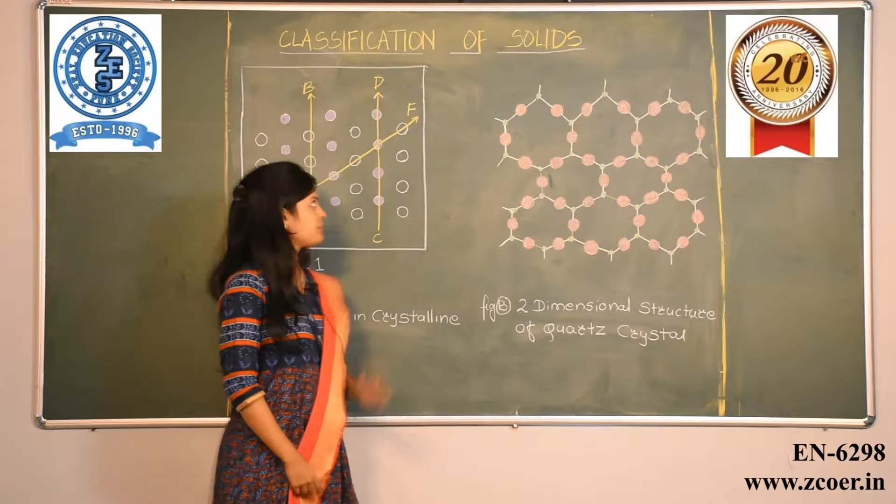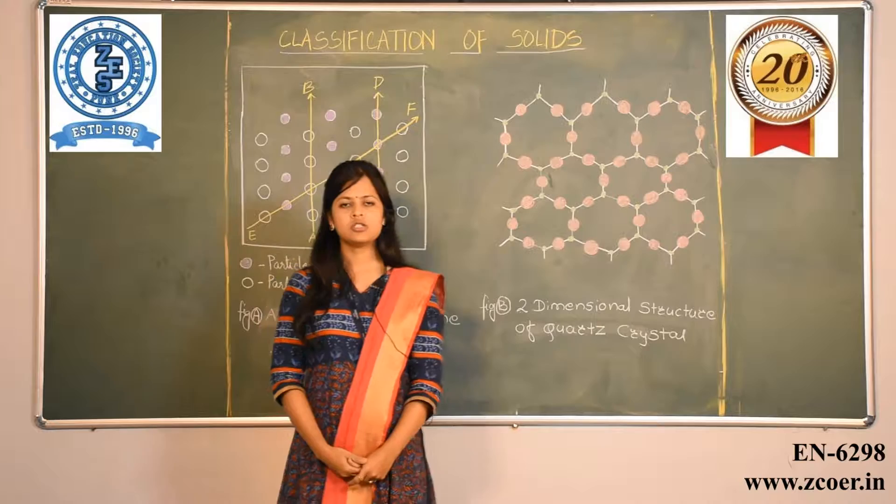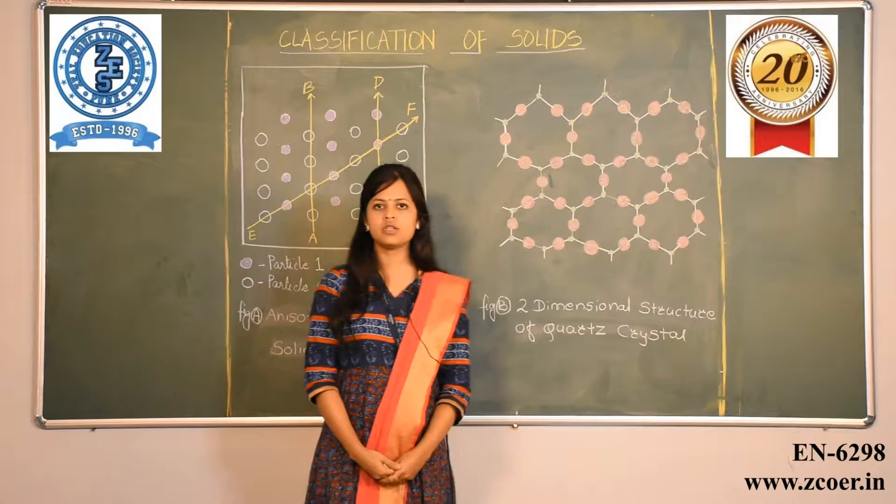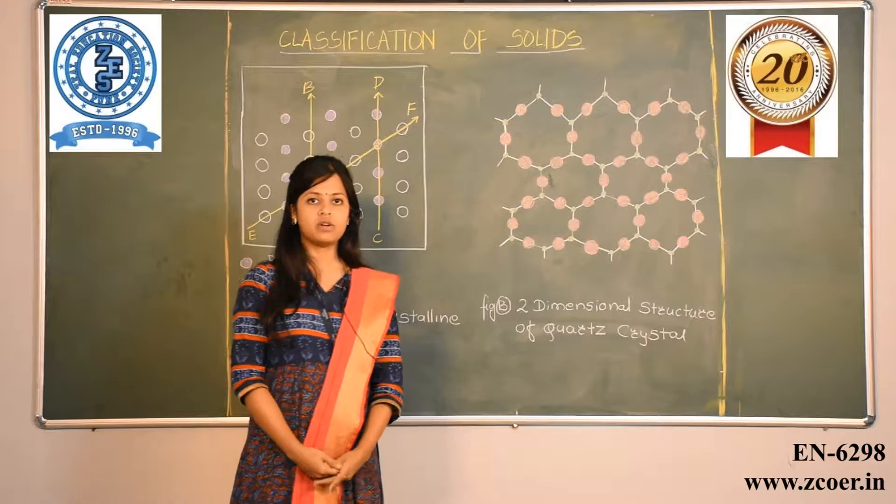Let us look at the classification of solids. Depending on the arrangement of constituent particles, solids can be defined as either crystalline solids or amorphous solids. First, we will look at crystalline solids. Crystalline solids are homogeneous solids in which the constituent particles — like ions and molecules — are arranged in an orderly, repeating manner.